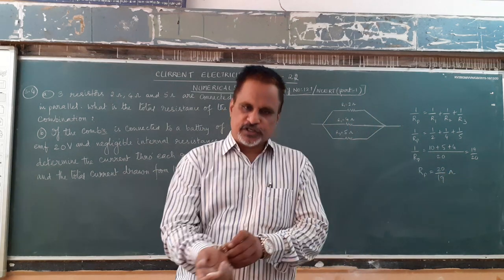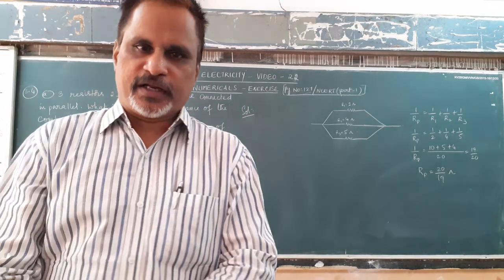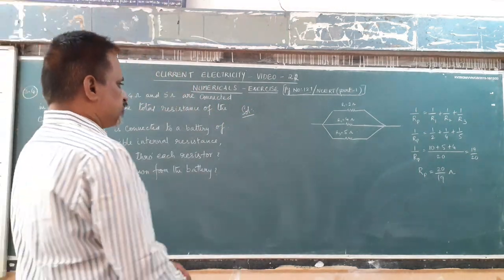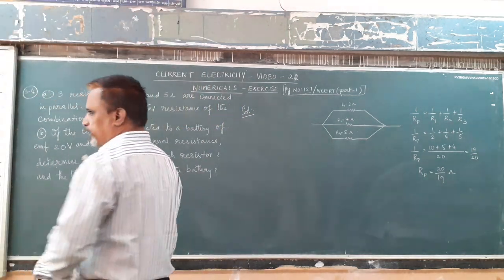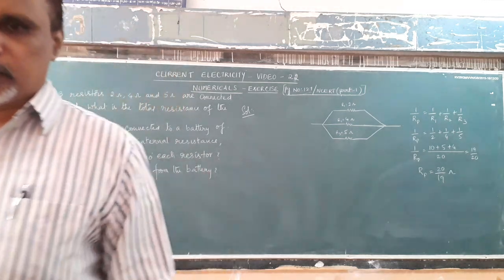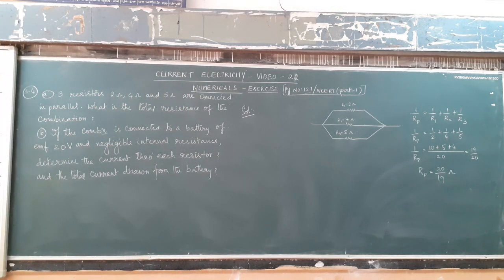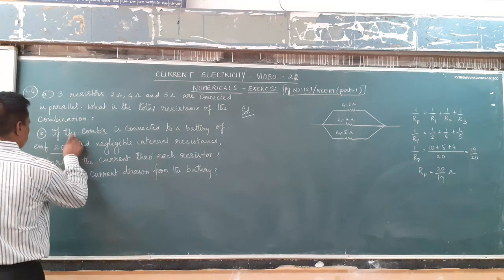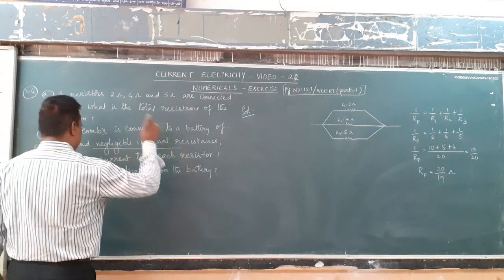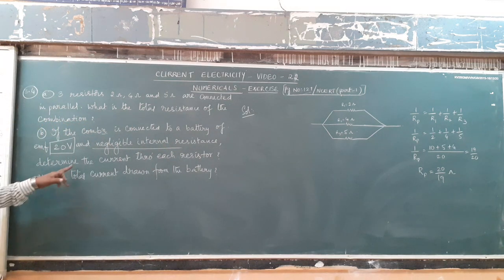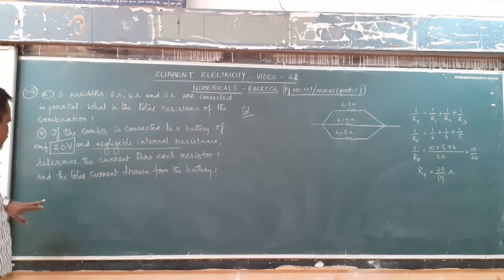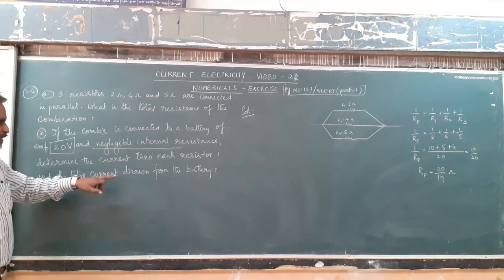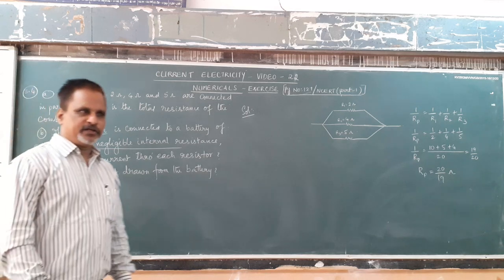How much is it? 20/19 ohms. This is for the first part. Now read the second part. The second part of the numerical says that if the combination is connected to a battery of 20 volt EMF and negligible internal resistance, determine the current through each resistor and also the total current drawn from the battery.